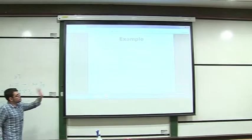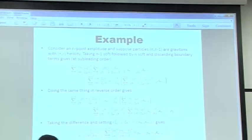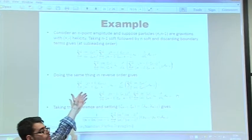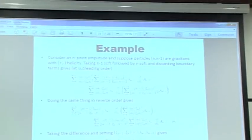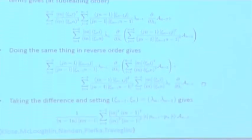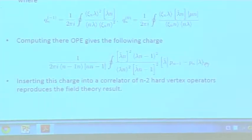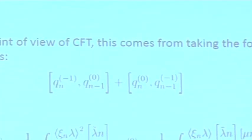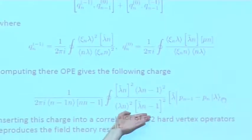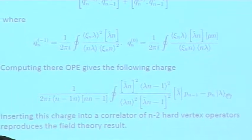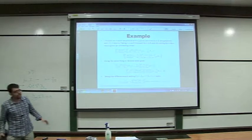This picture can be verified using explicit field theory calculations. You can explicitly compute the commutator of consecutive soft limits and after sufficient massaging get a very compact answer. At the same time, from the CFT point of view, it just corresponds to taking the OPE of certain charges. When you compute their OPE, you get a charge that has precisely the structure expected — plugging it into a correlator of N-2 hard vertex operators and integrating around each one, adding up the residues, gives precisely the expected formula.